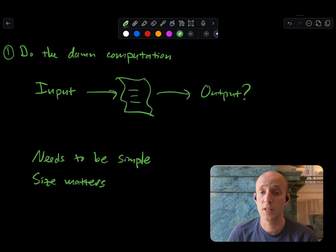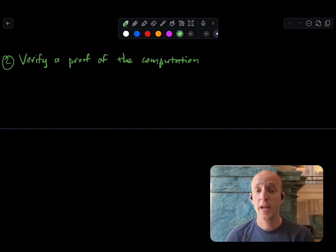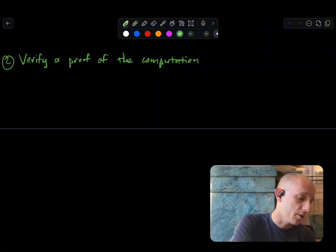So this only works for very simple computations and not the kind that Alpen wants to do. So for complex financial transactions, we can't verify the computation in Bitcoin script. Instead, we can generate a proof that the computation is correct and then verify that the proof is correct on-chain. So what does that look like?